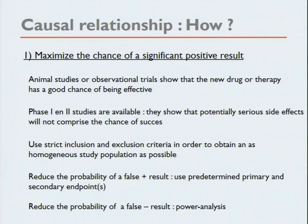The pharmaceutical industry maximizes the chance of a significant positive result: they first have animal studies or observational trials showing that the new drug has a good chance of being effective, then do phase one and phase two studies, look for potentially serious side effects and pharmacogenetics, use strict inclusion and exclusion criteria to obtain a homogeneous study population, reduce the probability of false positive results using predetermined primary and secondary endpoints — calculating only a few p-values — and reduce the probability of false negative results by doing a power analysis.